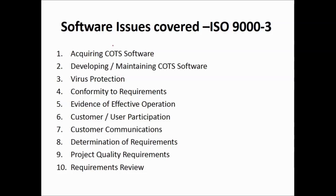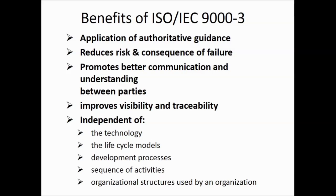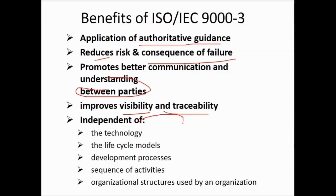Software issues covered in ISO 9003 include acquiring software, software development and training, maintaining software, virus protection, conformity to requirements, evidence of effective operation, customer and user participation, customer communication, and determination of requirements. The benefits of ISO 9003 are: application of authoritative guidance, reduction of risk and consequences of failure, promotes better communication and understanding between parties, improves visibility and traceability, and is independent of any technology, lifecycle model, development process, sequence of activity, or organizational structure.